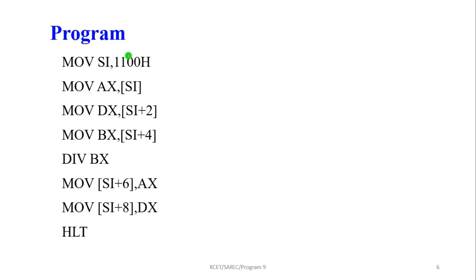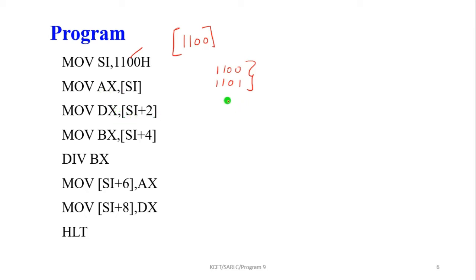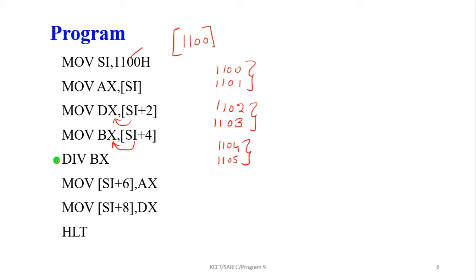Now for the program. Initially, we set the starting address 1100 and move it into the SI register. SI pointing to 1100 and 1101 gives the lower word of the dividend, which is moved into the AX register. SI plus 2, meaning 1102 and 1103, contains the higher word of the dividend and is moved into the DX register. Memory locations 1104 and 1105 contain the divisor value, which is moved into the BX register.